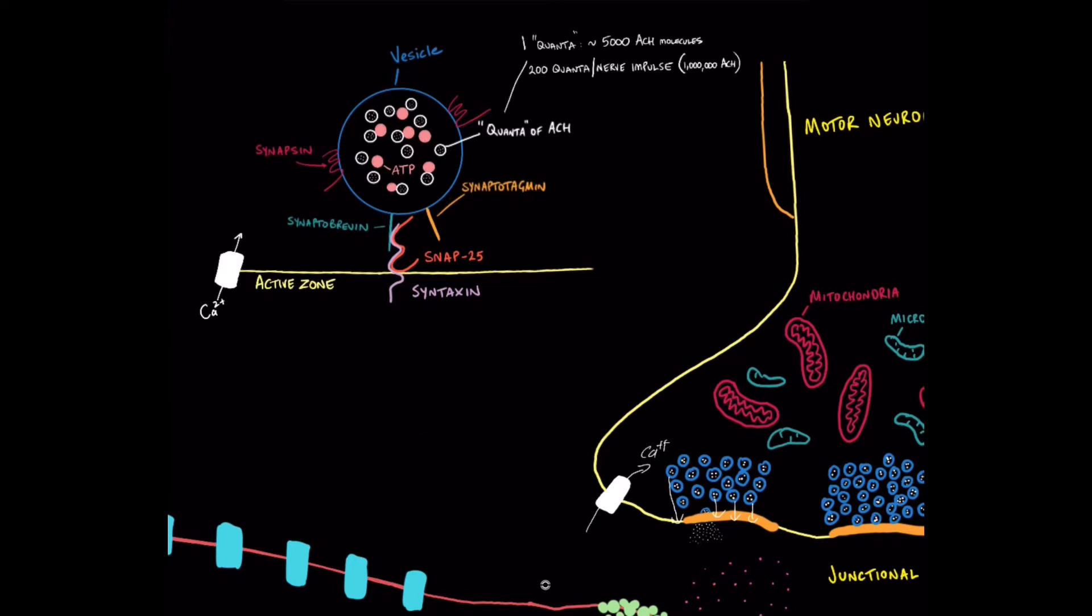And these quanta are thought to have about 5,000 acetylcholine molecules in them. When there's a full nerve impulse from the motor neuron it's thought that around 200 quanta are released, which would be about a million acetylcholine molecules. So huge amounts of acetylcholine released into the cleft and that ends up interacting with about 500,000 nicotinic acetylcholine receptors.